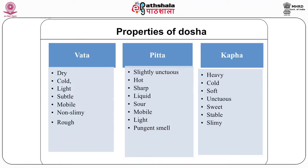By analyzing the functions of dosa, the three dosas can be correlated with elementary system theory in physics, which identifies three main functions for an open system: input/output, throughput/turnover, and storage. In a balanced state, the nature of dosas is to serve an integrative function and to be materially and energetically supportive of the biopsychosocial well-being of the individual. Each dosa has distinct properties depending upon the predominance of basic elements of which it is composed. Vata dosa has properties like dry, cold, light, subtle, mobile, non-slimy and rough. Pitta dosa is slightly unctuous, hot, sharp, liquid, light and has a pungent smell. Kapha dosa is heavy, cold, soft, unctuous, sweet, stable and slimy.